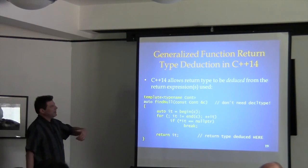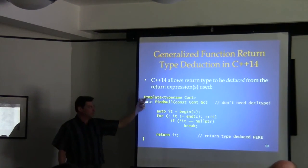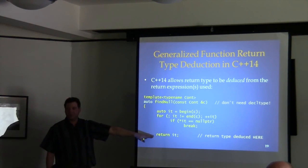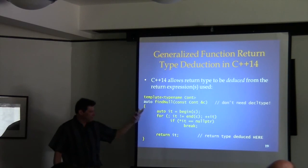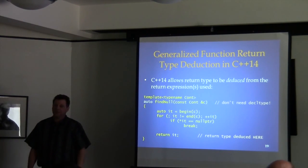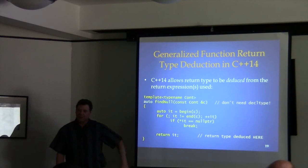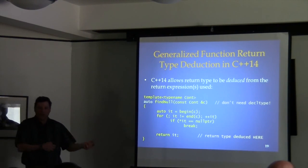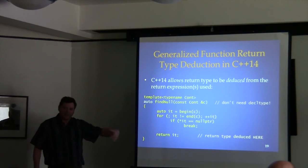In C++14 there's yet another use of auto: a function can be declared as returning auto with no trailing return type. This tells the compiler to figure out the return type by looking at the return statement and filling it in. It's not 100% universally applicable — if you have multiple return statements returning different types, this doesn't compile. The compiler won't try to guess which type to convert to which.